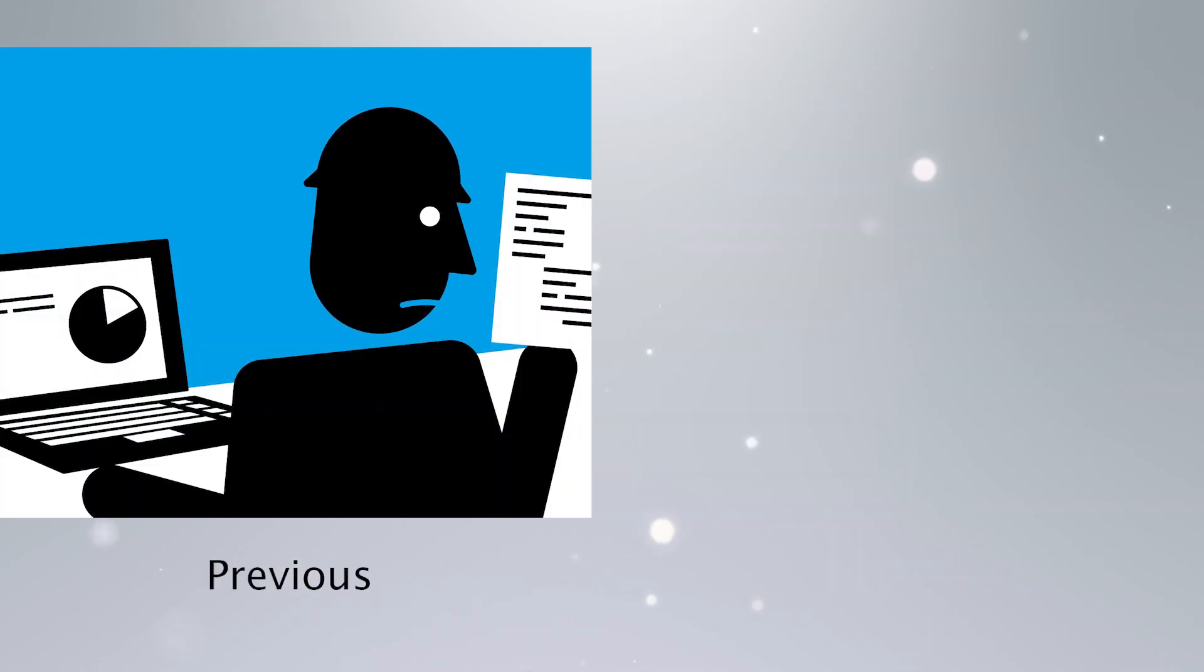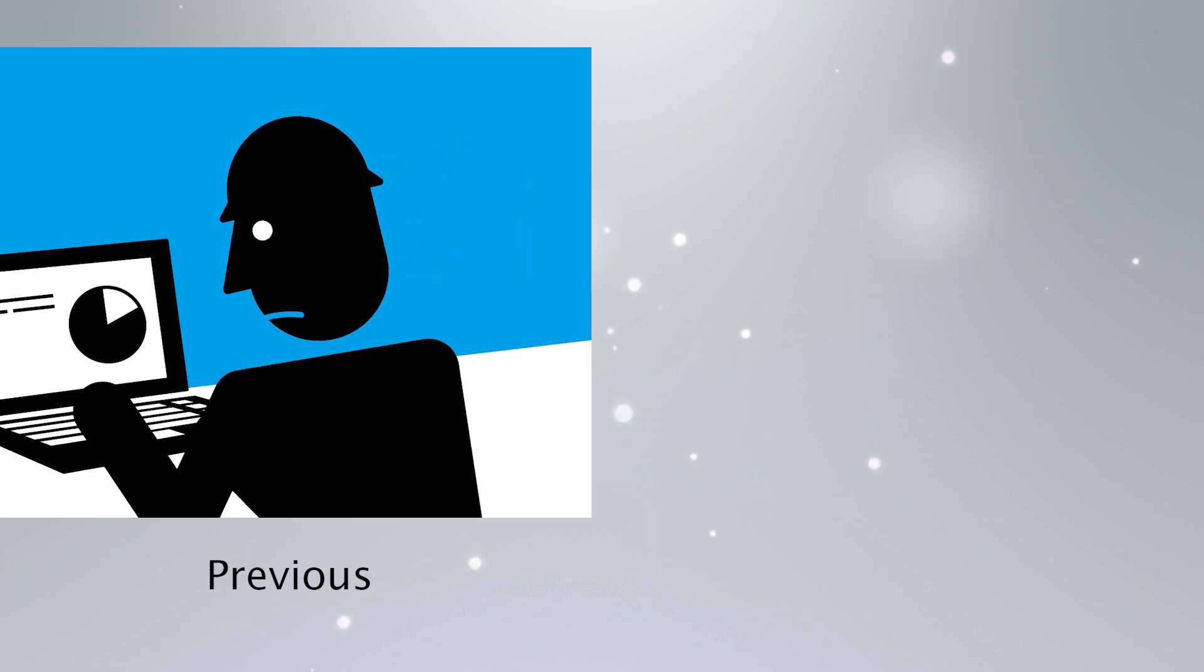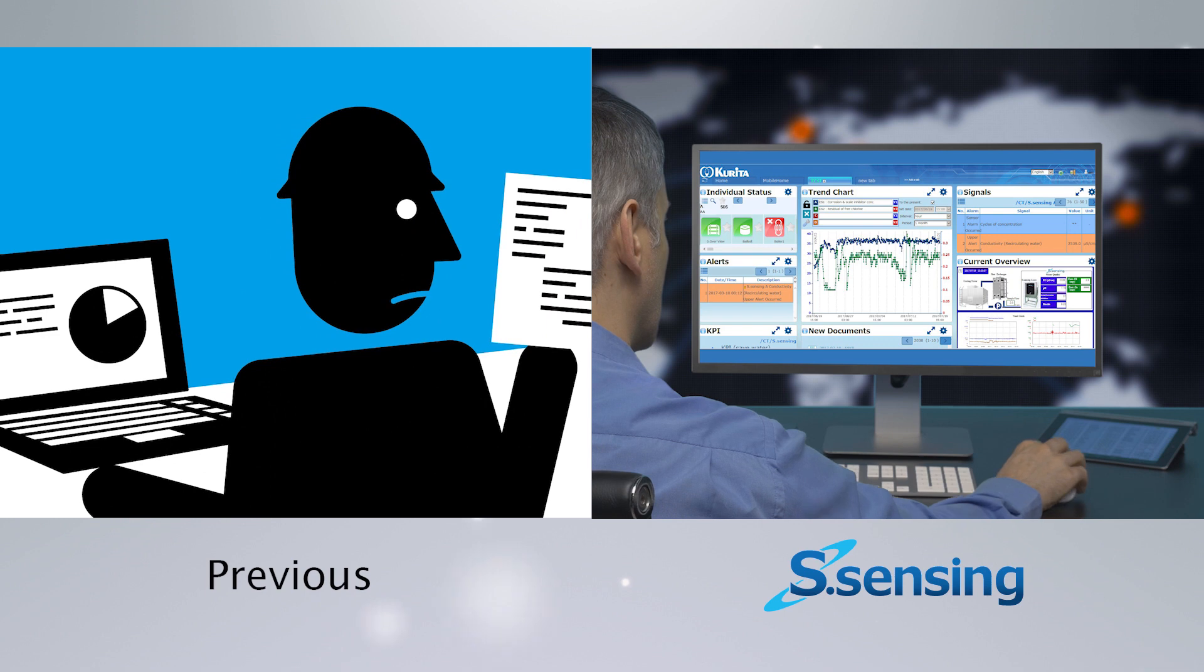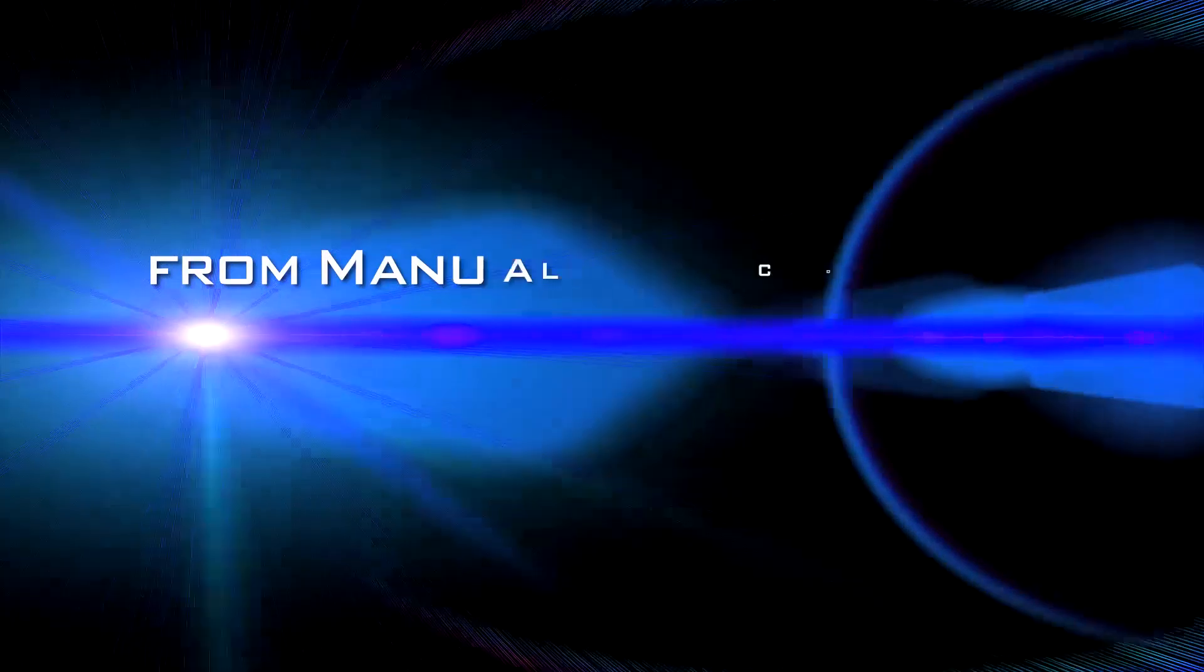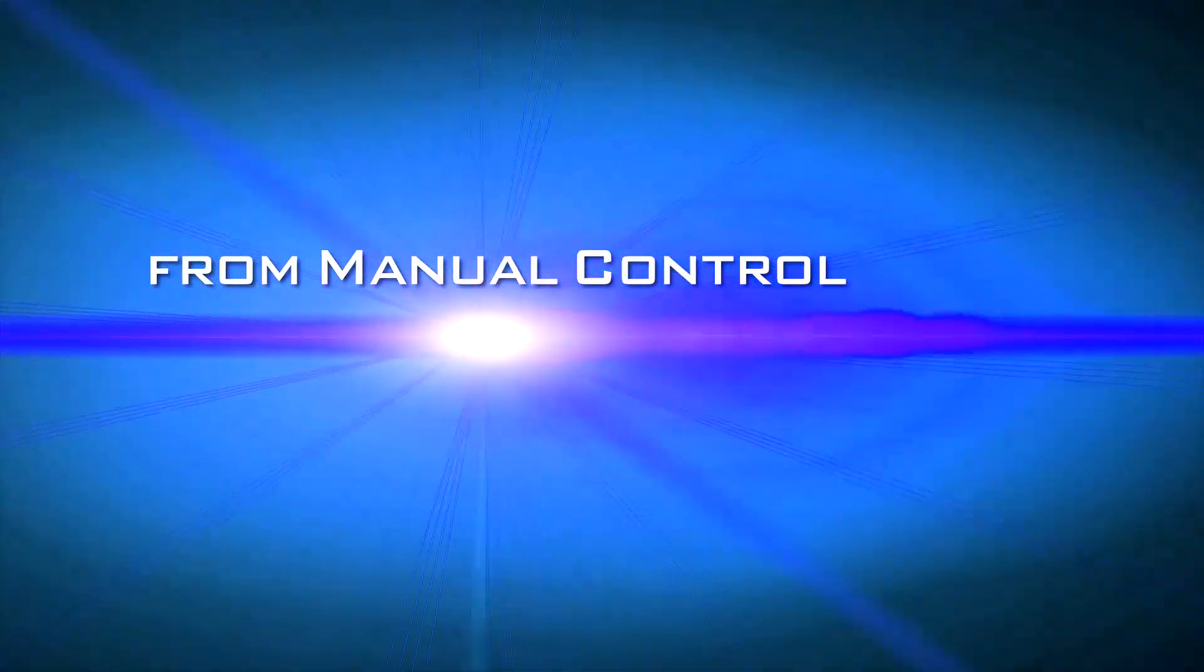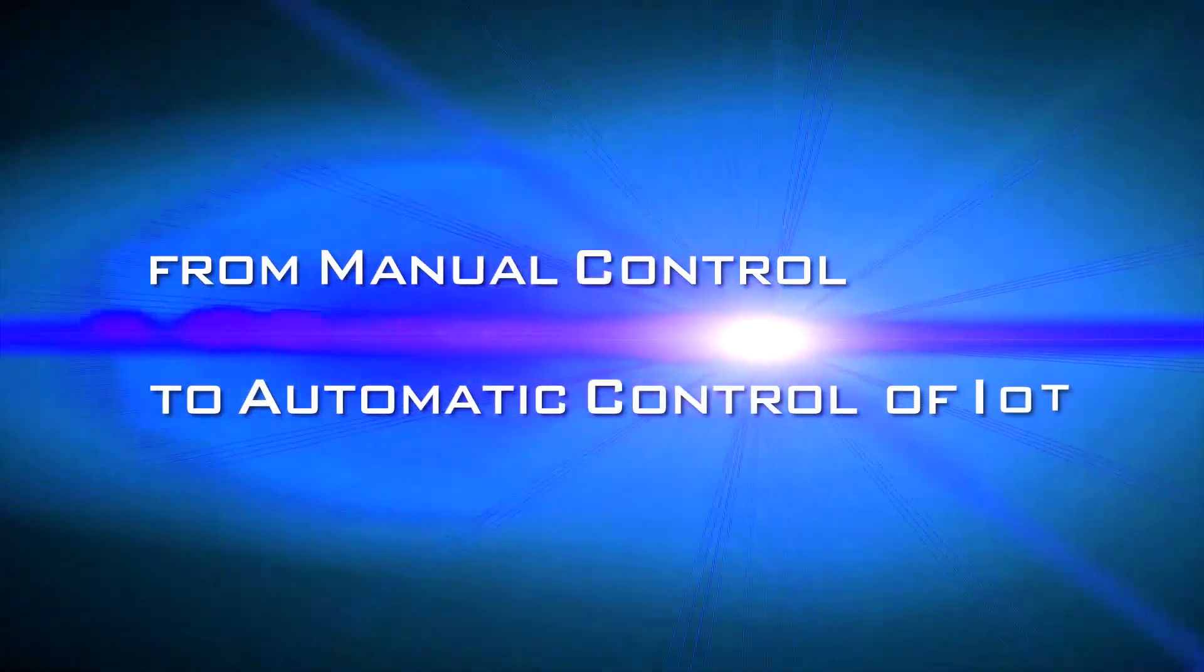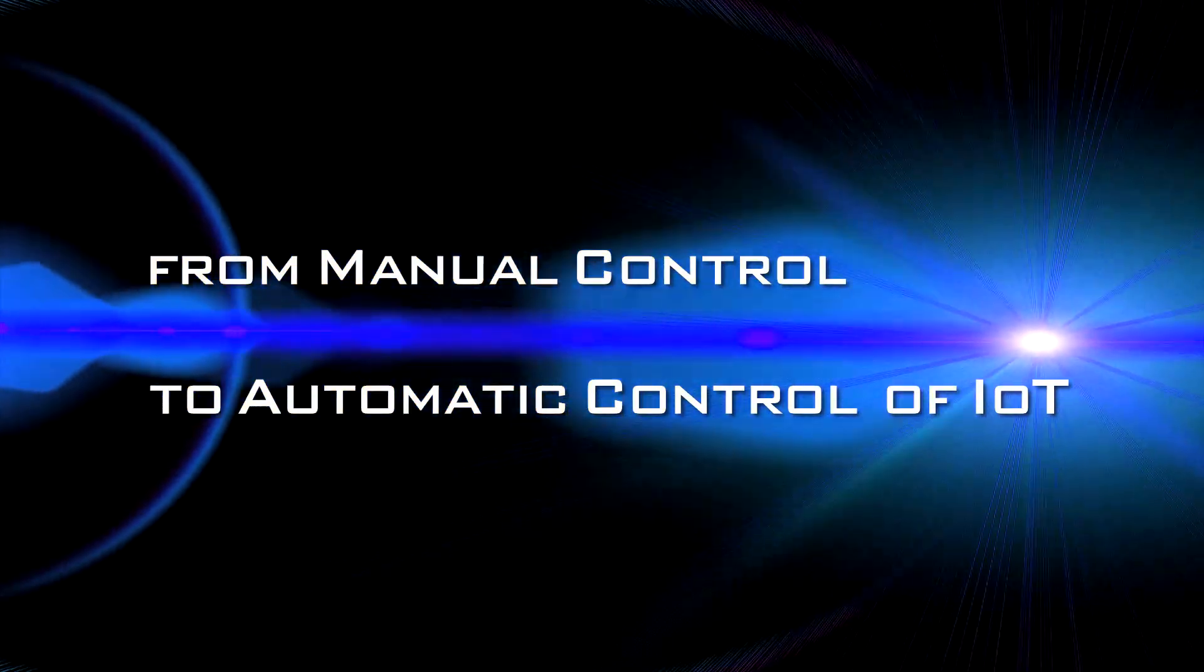It will transform the conventional method of sharing data through time-consuming reports prepared manually to a style in which information is shared at once via the network. S-Sensing will revolutionize the manual control system, turning it into an automatic control system that relies on IoT.